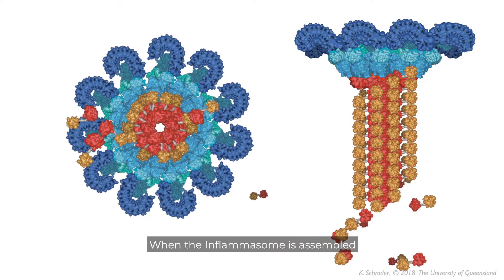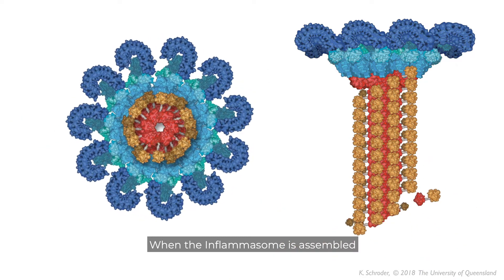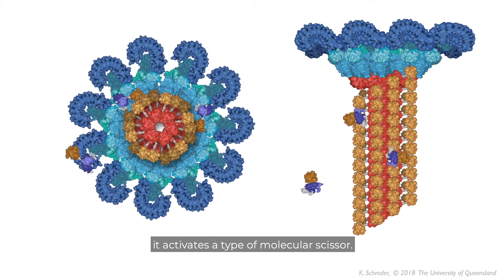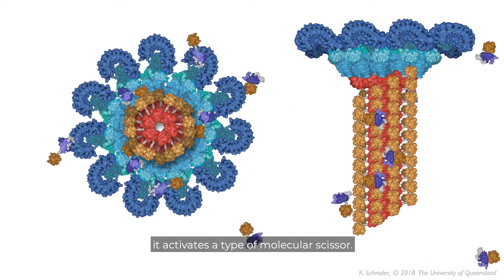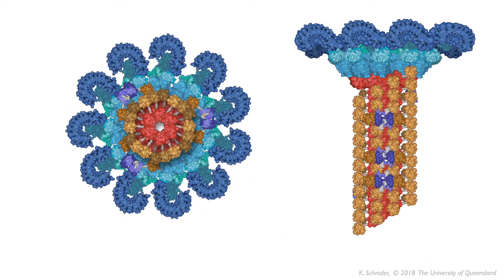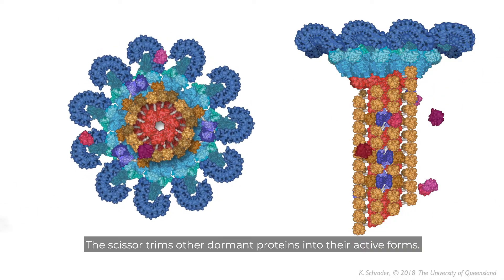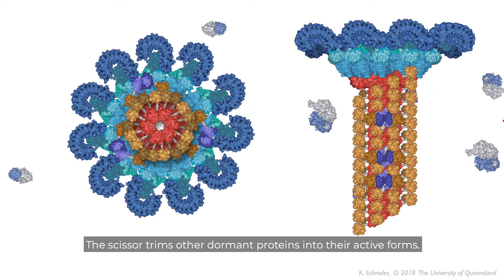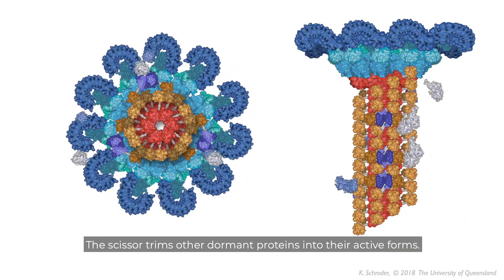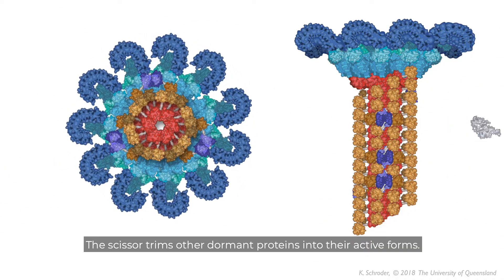When the inflammasome is assembled, it activates a type of molecular scissor. The scissor trims other dormant proteins into their active forms.